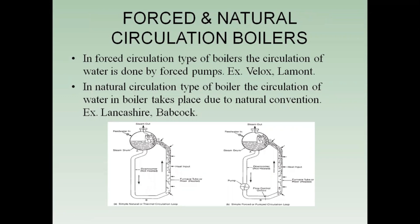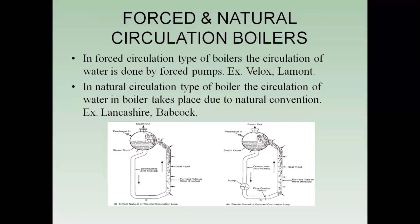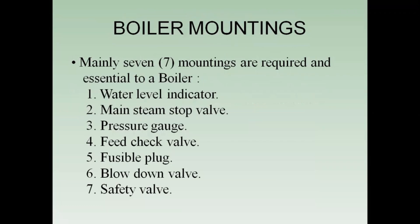For forced circulation boilers, there is a pump, and with the help of this pump the water is flowing from one direction to another. In the natural circulation boiler, there is no need for a pump — the water flows due to natural convection. Examples of natural circulation boilers are the Lancashire and Babcock boilers, and examples of forced circulation boilers are the Velox and La Mont boilers.